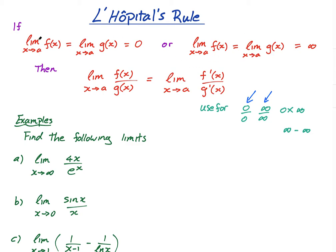The formal rule states: the limit as x approaches a of f(x) over g(x), where both f(x) and g(x) approach 0 — giving 0 over 0 — or both approach infinity — giving infinity over infinity — equals the limit of the derivatives of f and g respectively. I'm not going to prove this, but I'll explain it intuitively through an example.